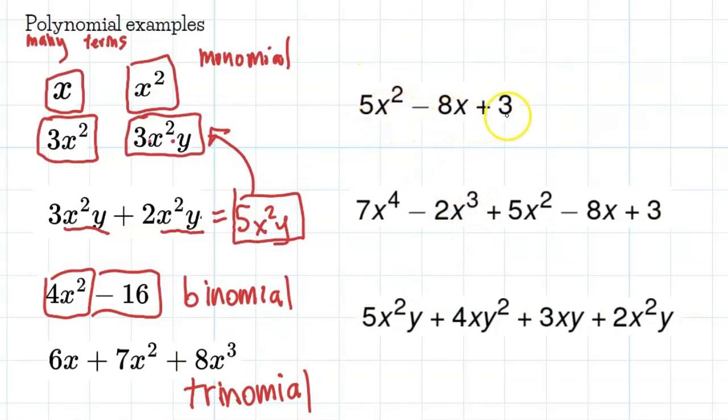And look at this one. We have an x squared, an x, and just a number. The number counts as a certain term, so this is going to be a trinomial.